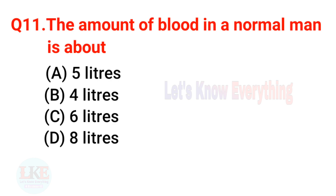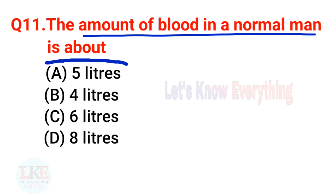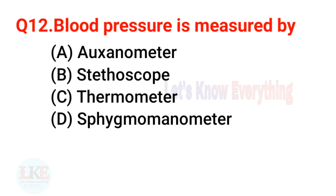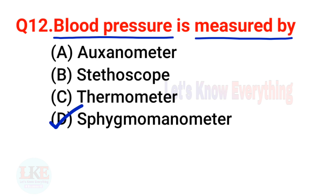Question 11: The amount of blood in a normal man is about 5 liters. Question 12: Blood pressure is measured by a sphygmomanometer.